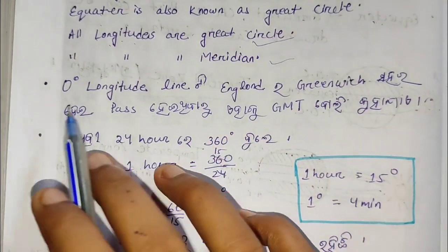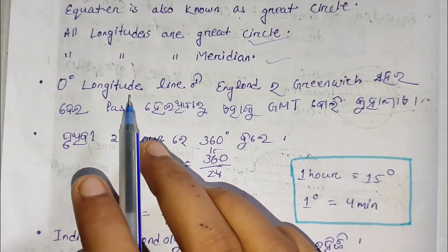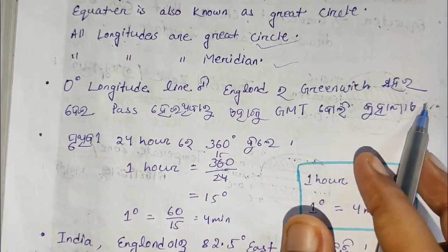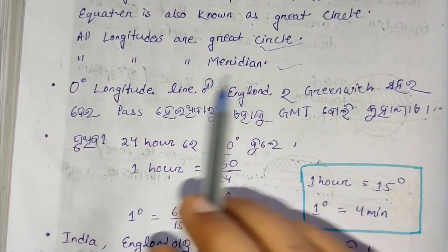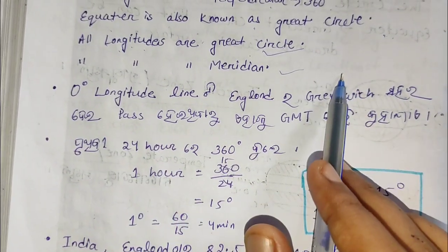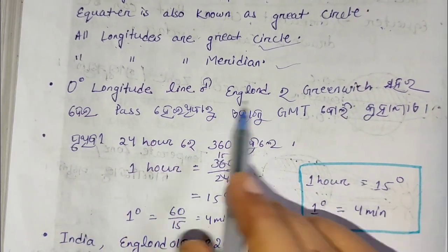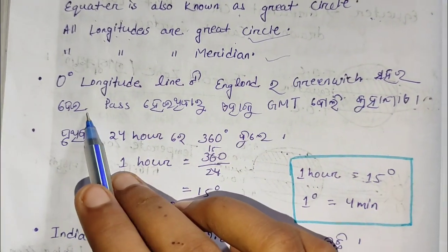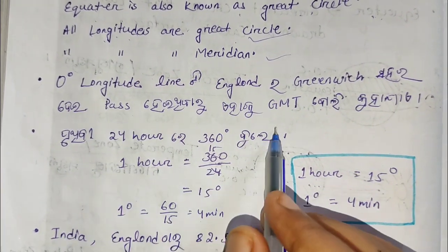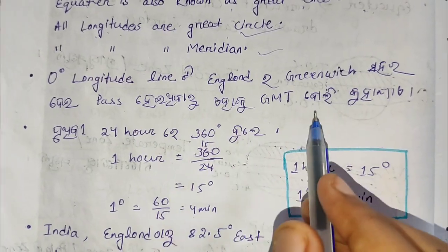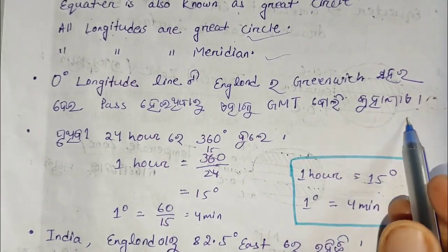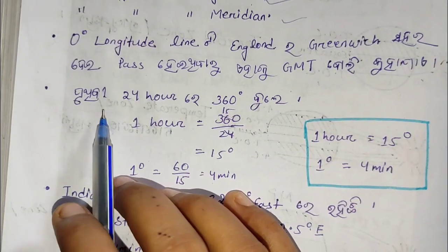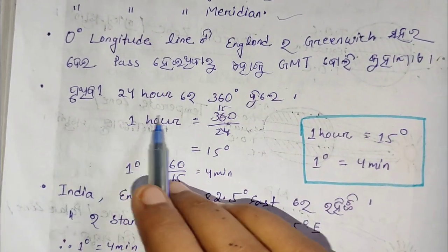The 0 degree longitude line passes through Greenwich, England. This line is known as the Greenwich Meridian and gives us GMT — Greenwich Mean Time. From there, 1 degree, 2 degree and so on are measured.